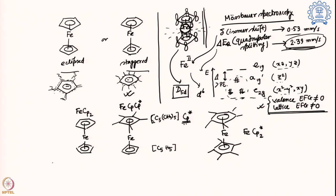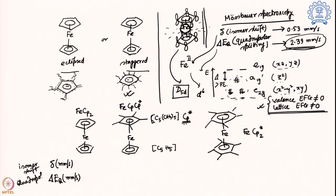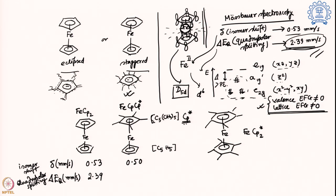Looking at the isomer shift and quadrupolar splitting for these three compounds: for FeCp2 the values are already known — 0.53 mm/s and 2.39 mm/s. When we move to FeCpCp*, the isomer shift goes down slightly to 0.50 mm/s, which suggests the oxidation state on iron is moving towards a more positive value. The quadrupolar splitting also changes slightly to 2.44 mm/s.